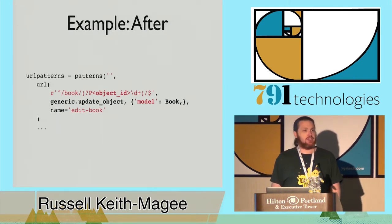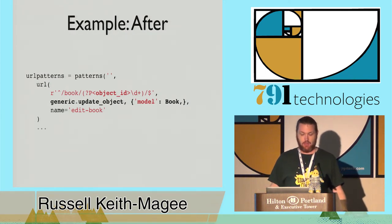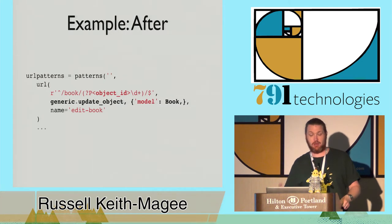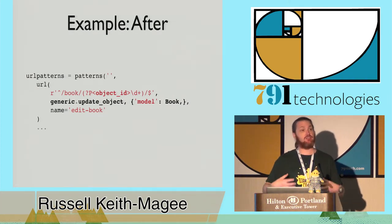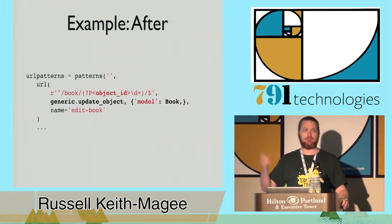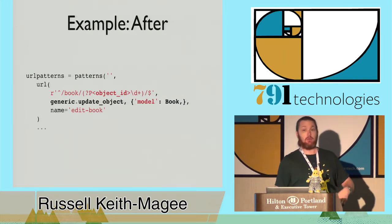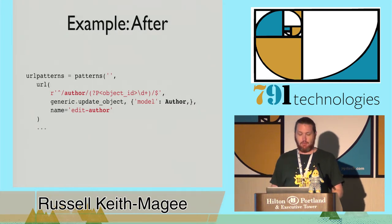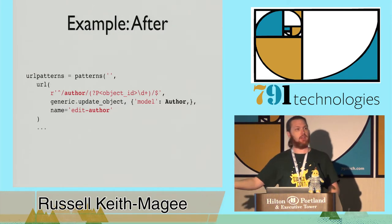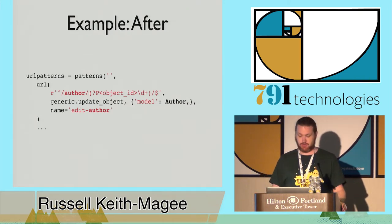Generic views are there to say that code is so cookie-cutter that we can replace it. Instead of a book view, we replace it with the idea of updating an object, configured to specify we're updating books based on an object ID. So instead of rewriting all that boilerplate - the try-catch, if-post, and so on - you drop in a pre-canned version and just specify the model is Book. That's the best practices of code reuse: find the thing you're doing over and over, factor it out into something generic, and configure it on each individual use. If you also want to edit authors, the only changes are the URL path, the model, and the URL name.